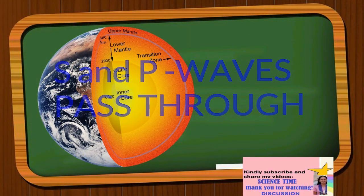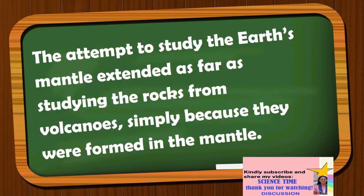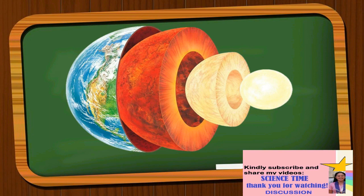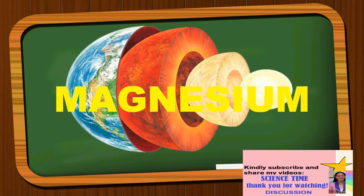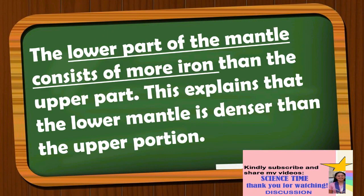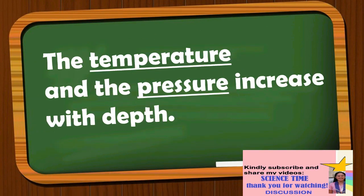The attempt to study the Earth's mantle extended as far as studying rocks from volcanoes, since they were formed in the mantle. Scientists also studied rocks from the ocean floor. They determined that the mantle is mostly made of silicon, oxygen, iron, and magnesium. The lower part of the mantle consists of more iron than the upper part, which explains that the lower mantle is denser. Temperature and pressure increase with depth.